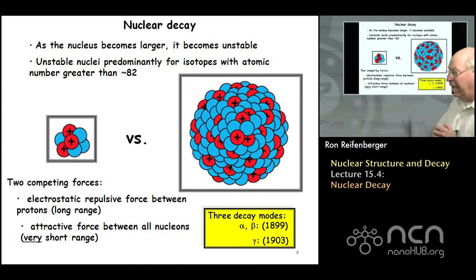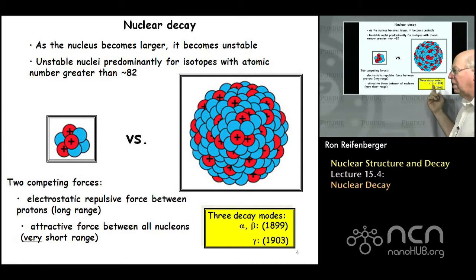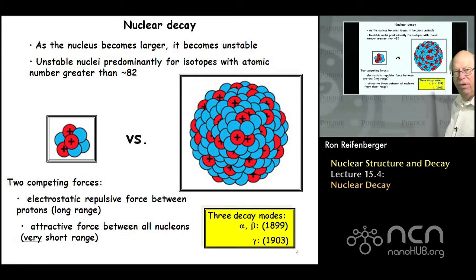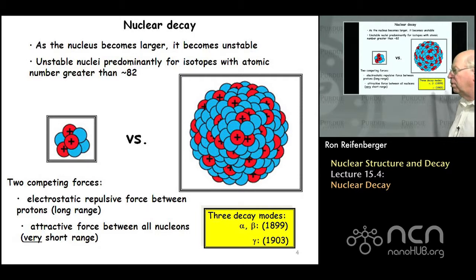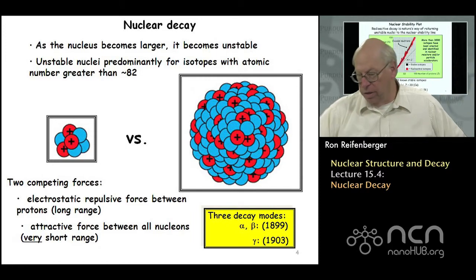Historically there have been three decay modes identified for all nuclear matter. The first two — alpha and beta decays — were discovered in 1899, and then gamma emission was identified in 1903. The gamma is the emission of an energetic photon, essentially an x-ray from the nucleus. The alpha and beta decay modes involve the ejection of charged particles from the nucleus itself. We'll talk more about these decay modes in the next lecture.